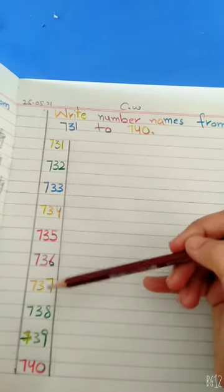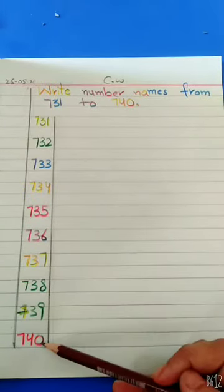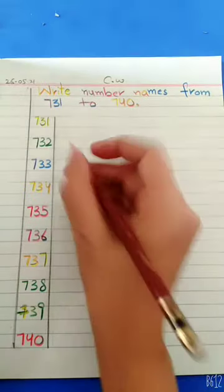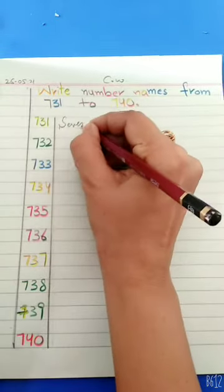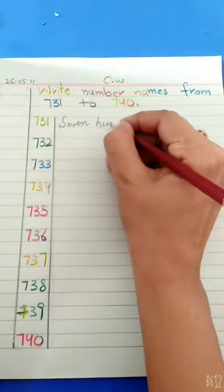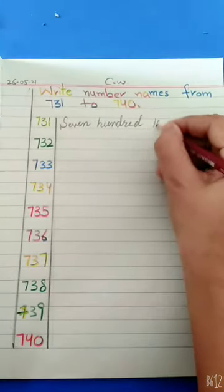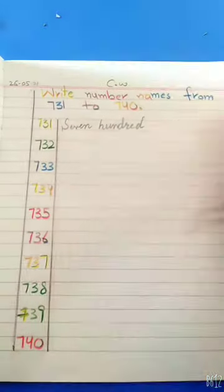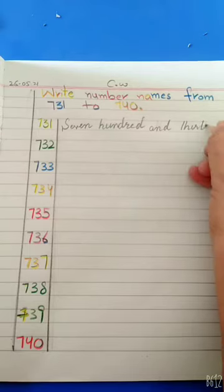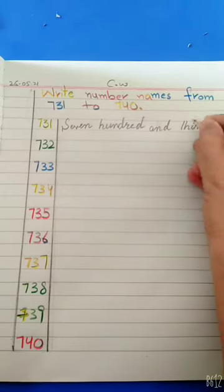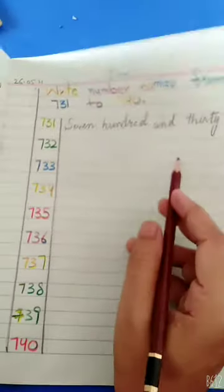736, 737, 738, 739, 740. Now we have to write: Seven hundred and thirty-one. Next.